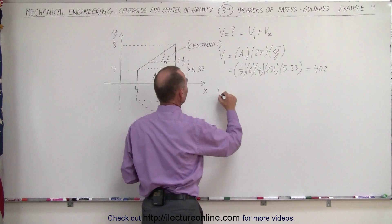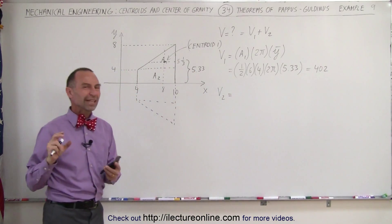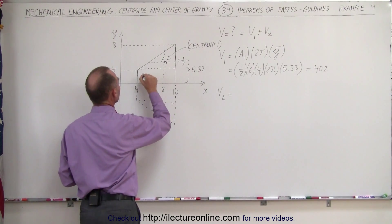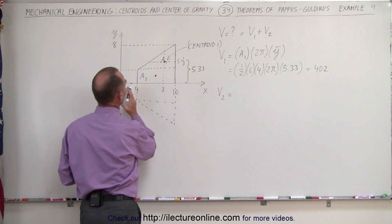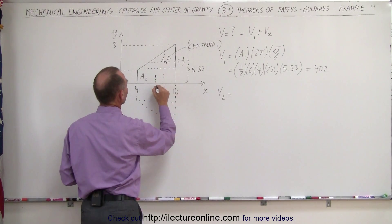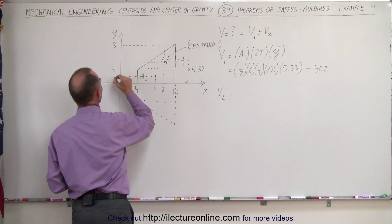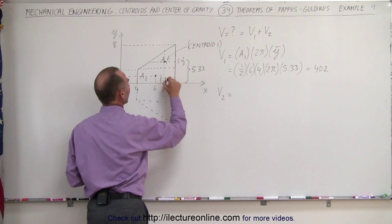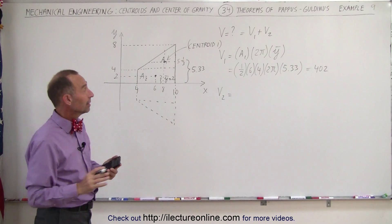Now we want to find the volume of the second part. That's a little bit easier because it's a rectangle. That means it's much easier to find the centroid of the rectangle. Let me move this A2 over here. The centroid would be right about there. At the halfway point between 4 and 10, that would be at 6. And the halfway point between 0 and 4, that would be at 2. Which means the distance of the centroid from the x-axis is equal to 2 units.